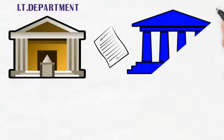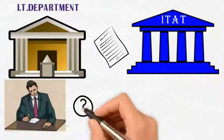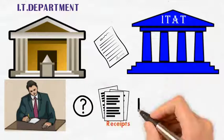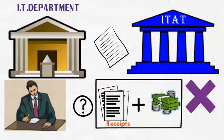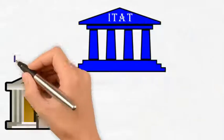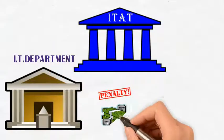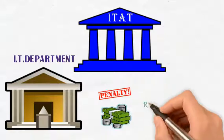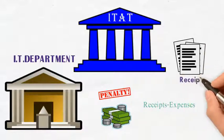The department went on appeal. ITAT held that the AO should verify again whether the receipts were added to miscellaneous income or not. ITAT also held that the department should compute the penalty on the income portion — i.e., receipts minus expenses only — and not on the entire receipts.